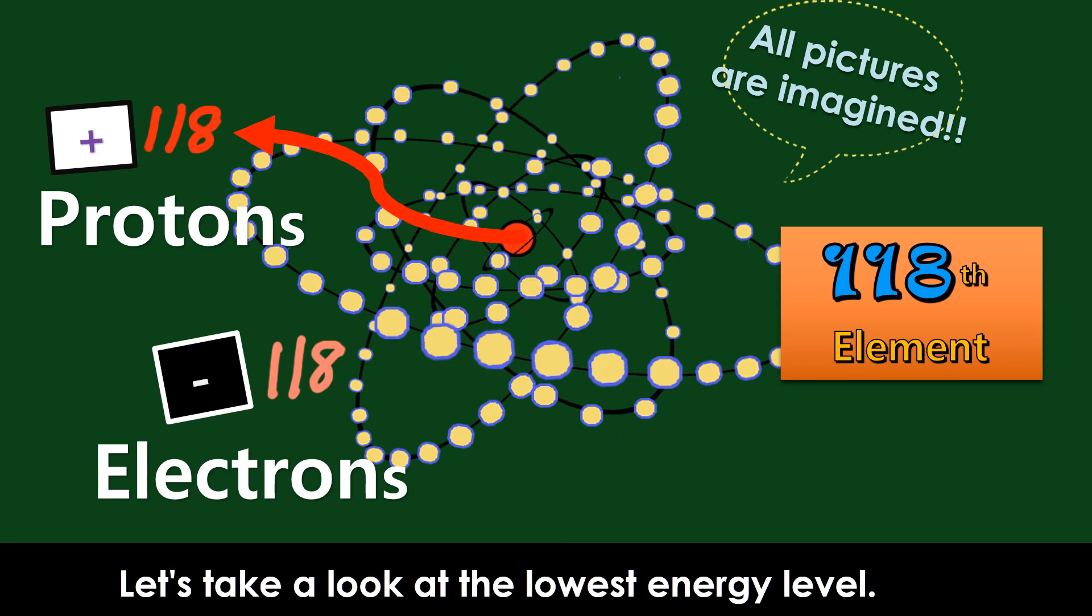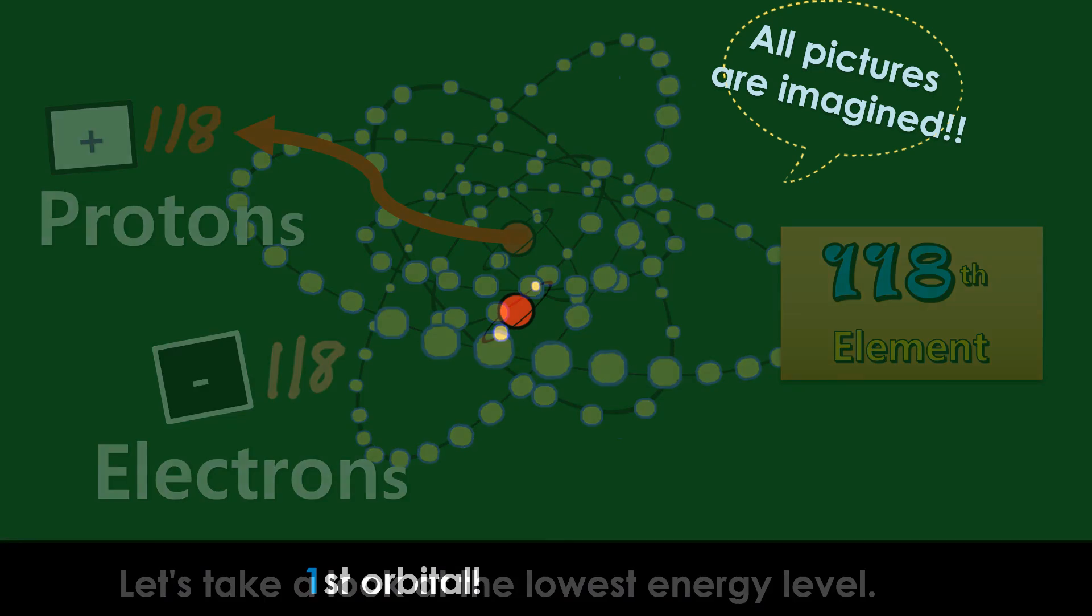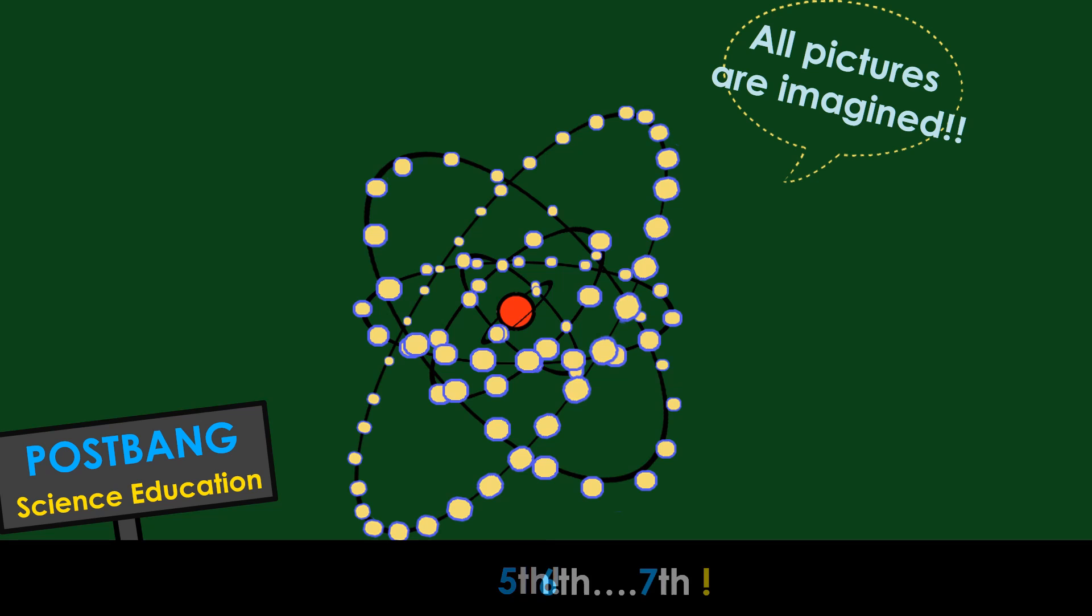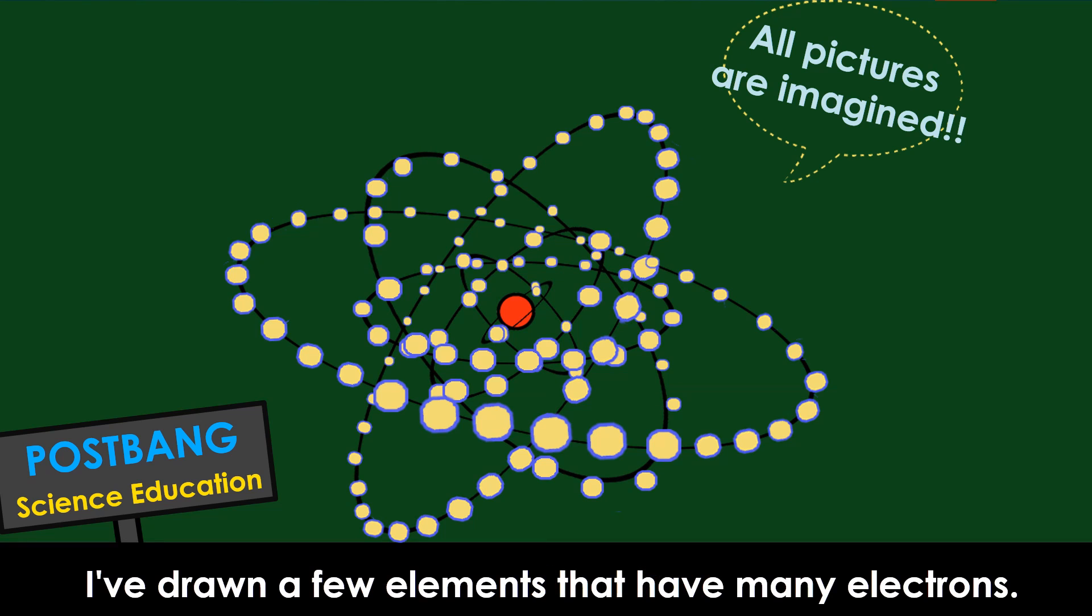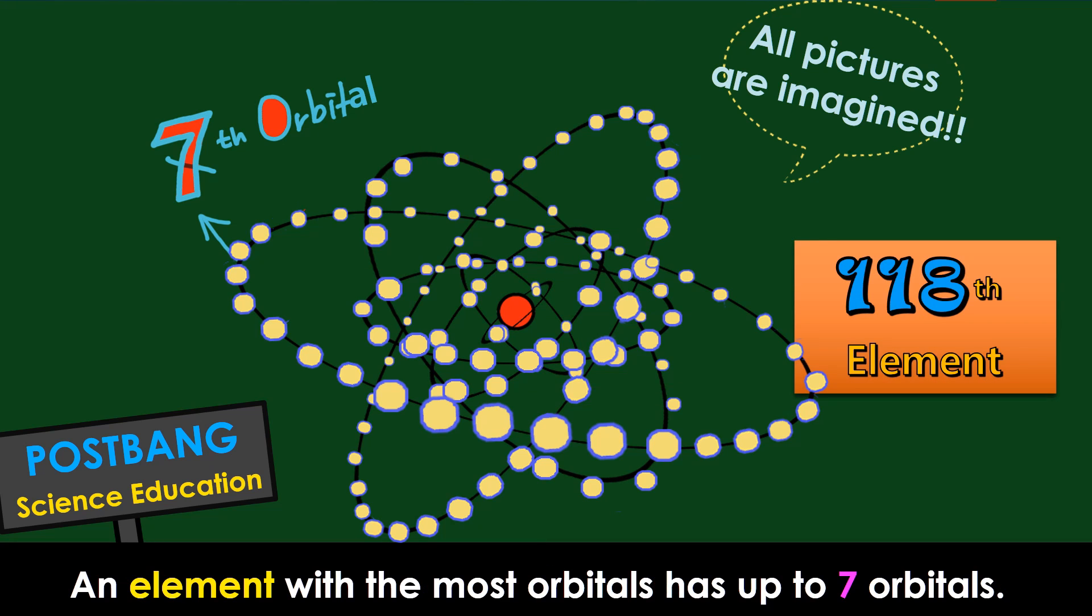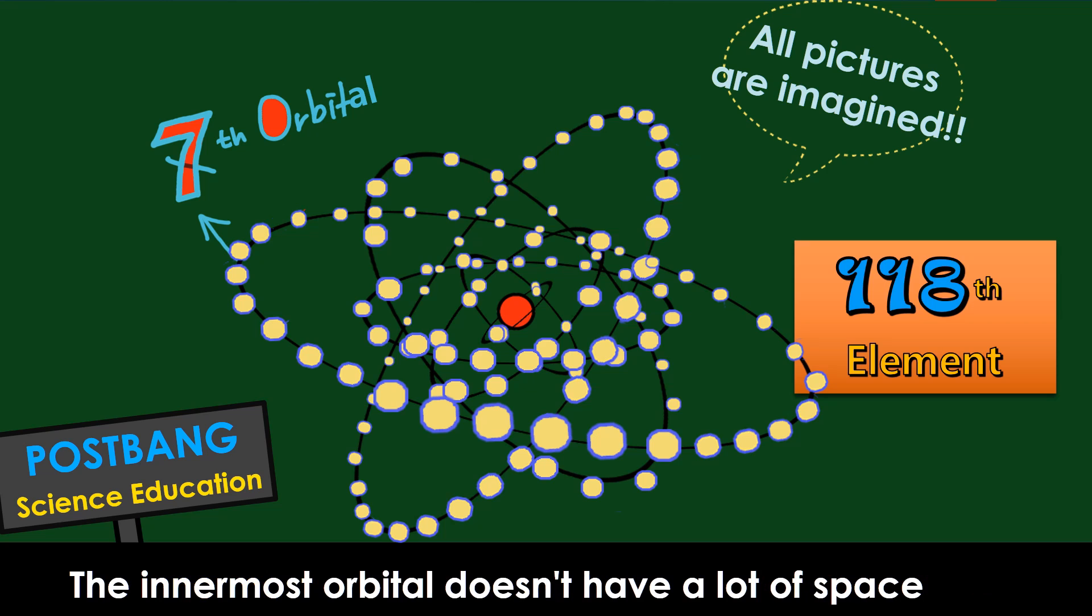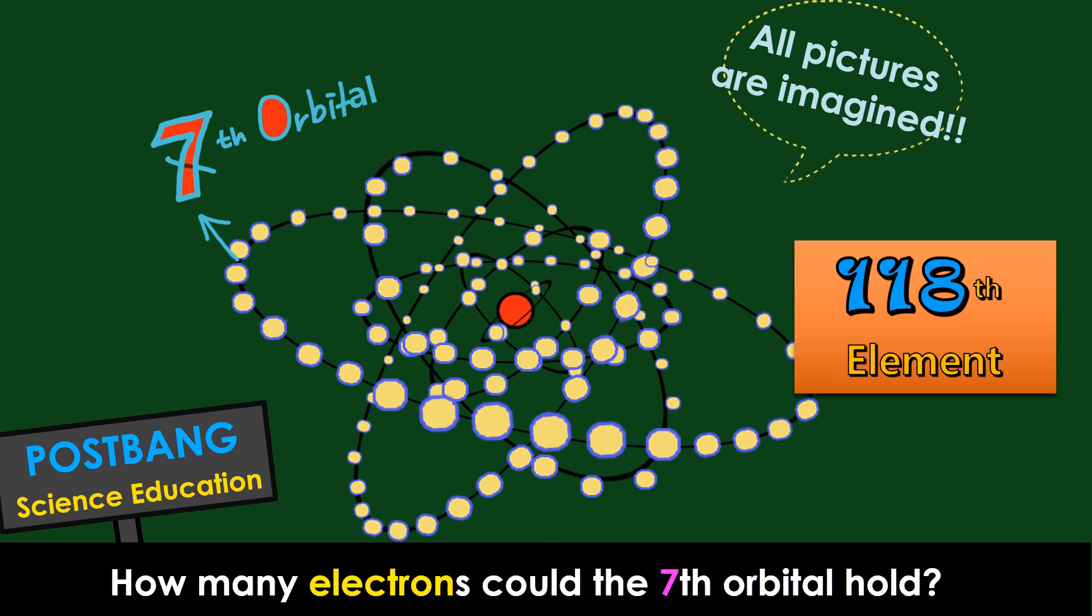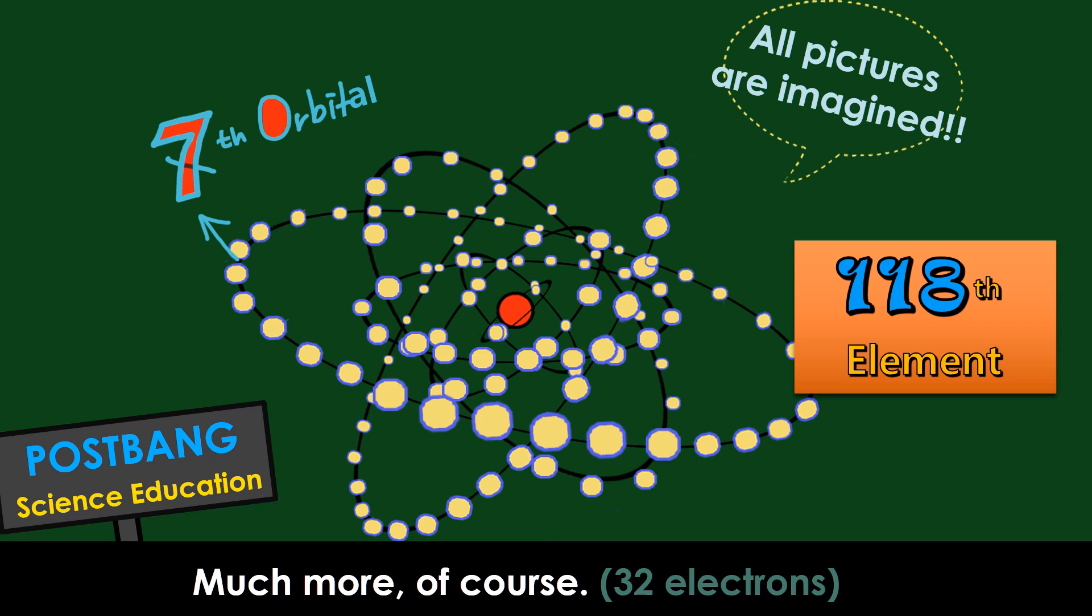Let's take a look at the lowest energy level. First. Second. I've drawn a few elements that have many electrons. An element with the most orbitals has up to 7 orbitals. The innermost orbital doesn't have a lot of space since it's the smallest. It can only hold up to 2 electrons. How many electrons could the 7th orbital hold? Much more, of course.